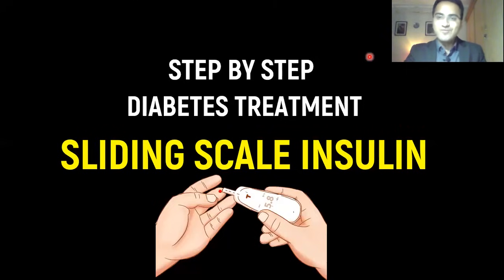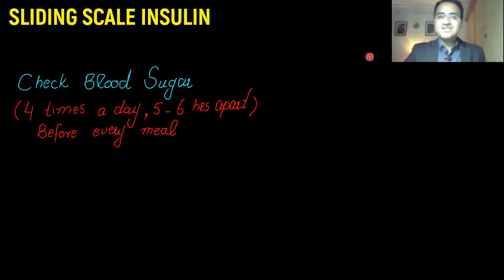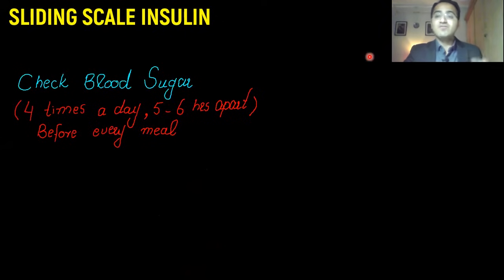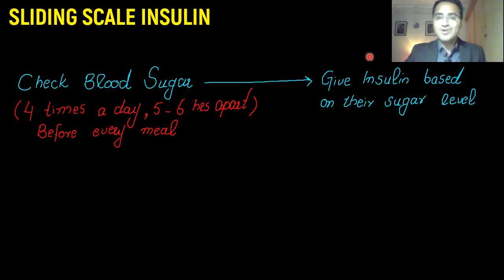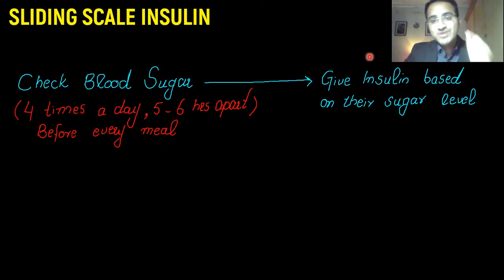In our video series of step-by-step treatment of diabetes, in this video we'll be talking about sliding scale insulin. The basic idea is that you check the blood sugar of the patient four times a day — five to six hours apart — before each and every meal. Then, according to the sugar level, you give an insulin dose. The insulin dose is based on the sugar level before every meal.